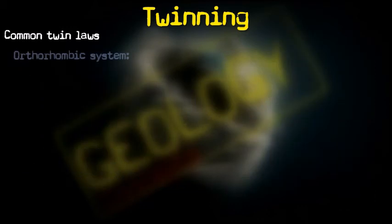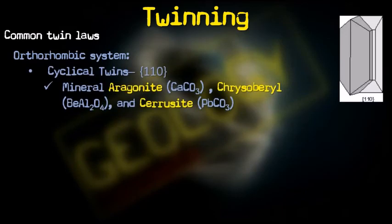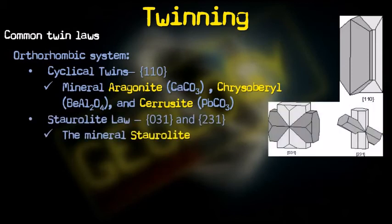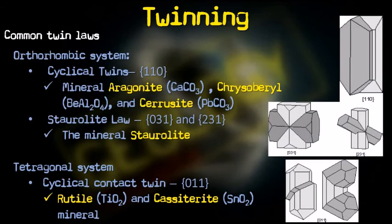In the orthorhombic system, cyclic twins with the (110) plane are shown by aragonite, staurolite, and zoisite. Staurolite also shows (031) and (231) twinning. In the tetragonal system, there is only one twinning, called cyclic contact twinning, which is shown by rutile and cassiterite.